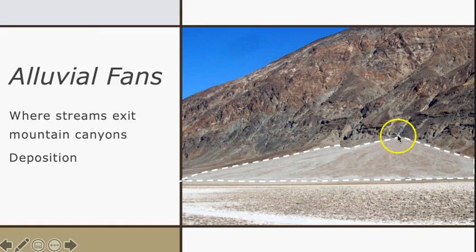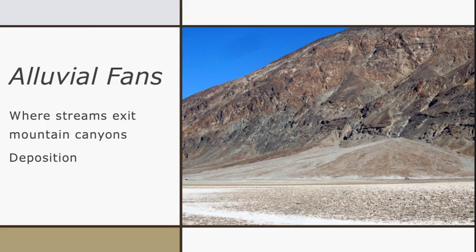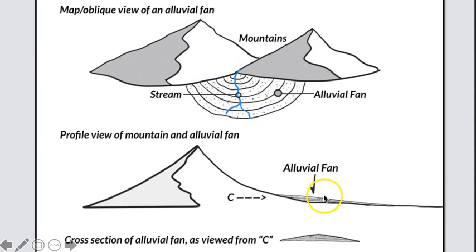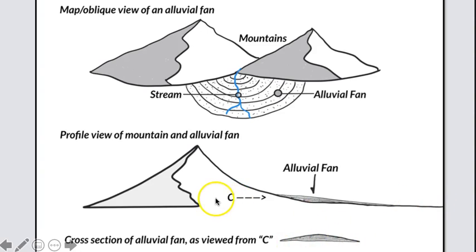Here the alluvial fan is highlighted by the dashed white line. There are actually two alluvial fans here that have merged, and this is called a bajada as well. Here we have an illustration showing mountains with a straight channel. The stream exits the mountains and deposits its load of sediment, building up a fan-shaped pile of alluvium over time. In profile or cross-section view, the fan is gently sloping relative to the steep mountains, then exiting onto the flat valley floor.